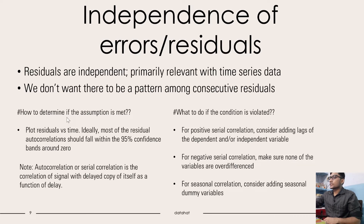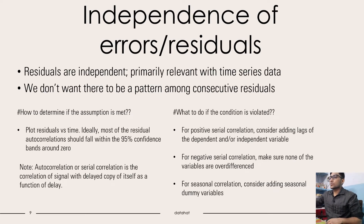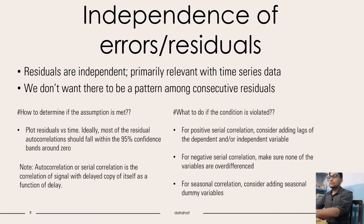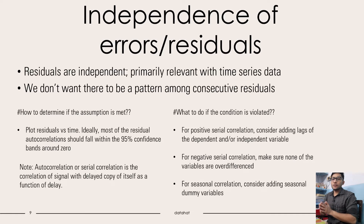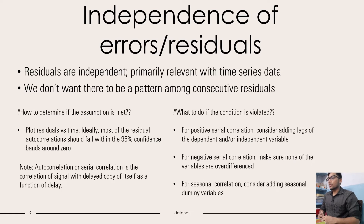We don't want there to be a pattern among consecutive residuals. To determine if this assumption is met, we plot residuals versus time. Ideally, most of the residual autocorrelations should fall within the 95% confidence bands around zero. Autocorrelation or serial correlation is the correlation of a signal with a delayed copy of itself as a function of delay. What we want is that most of this autocorrelation should fall within the 95% confidence interval.